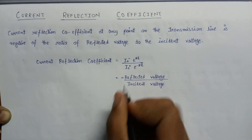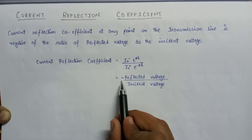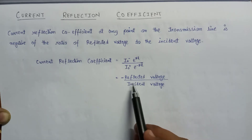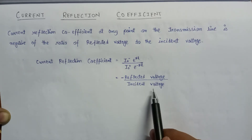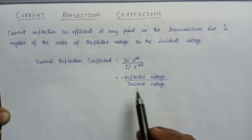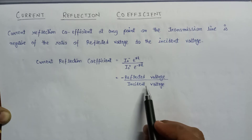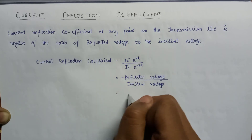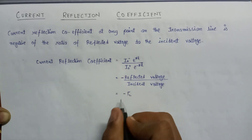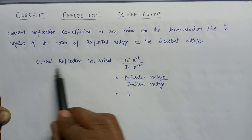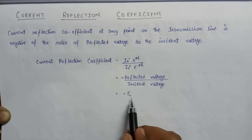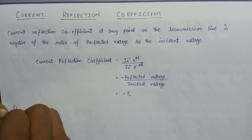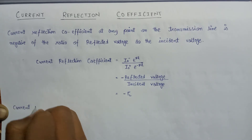We have to keep in mind that there is a negative symbol here. In the earlier lecture we discussed that the ratio of reflected voltage to the incident voltage is nothing but the voltage reflection coefficient. So the current reflection coefficient is the negative of the voltage reflection coefficient.